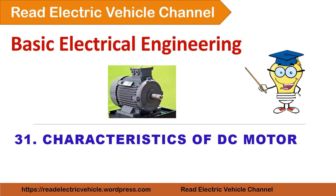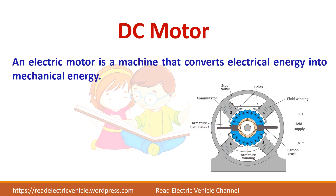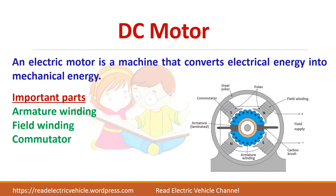In this video let us see about the different characteristics of DC motors. A DC motor is a machine that converts electrical energy to mechanical energy, and it has different parts: armature winding, field winding, commutator, brushes, and yoke. Depending upon how the field winding is connected with the armature, there are different types of DC motors.